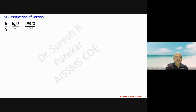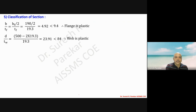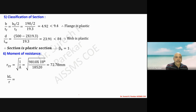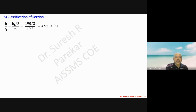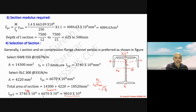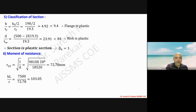We proceed with classification of section where beta b equals 1. The value of ryy is calculated from Iyy total of 9810 and total area of 18520, giving ryy equal to 72.78 mm. Then KL/r is calculated with K equal to 1, L equal to 7500 mm, which is the span of the gantry girder.